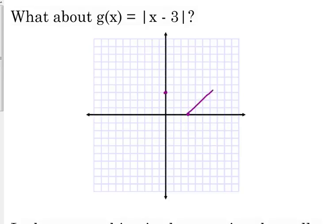The slope has not changed — it still has a slope of negative 1 on the left and positive 1 on the right. Same basic shape, just shifted over.